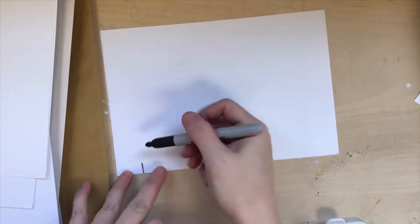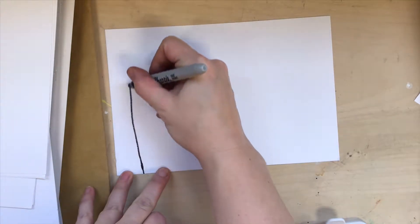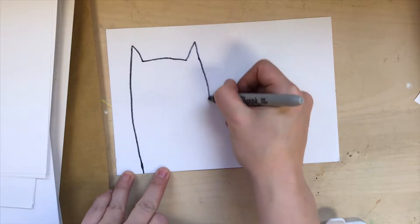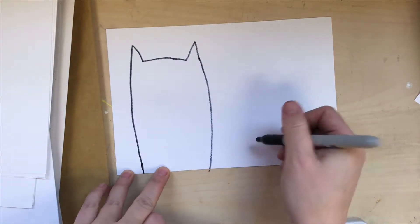So to start, we're going to draw a straight or maybe even wobbly line that comes up from the bottom, make a pointy ear, go across, make another pointy ear, and down.